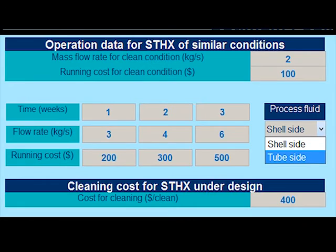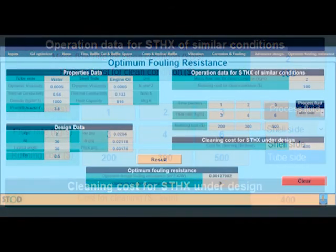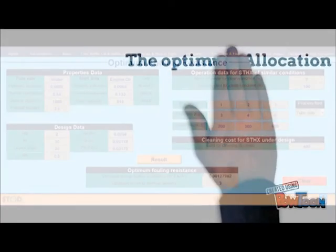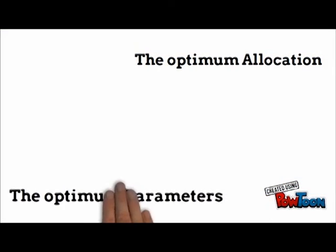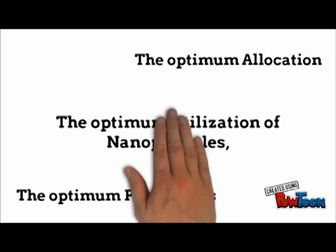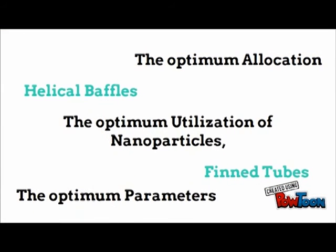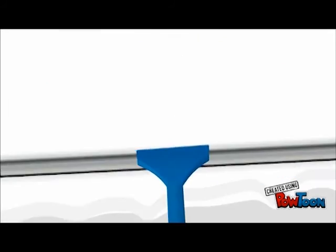The output also includes the optimum fouling resistance that should be used in the design. The designer knows the optimum allocation, the optimum parameters, and the optimum utilization of nanoparticles, fine tubes, and helical baffles.